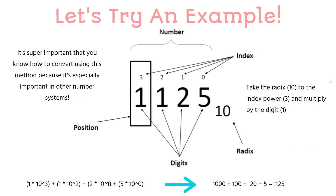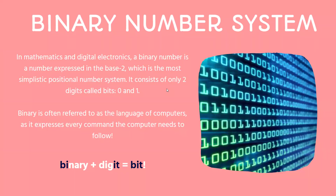This number is in the decimal number system. What you do is take the radix to the index power and multiply by the digit. That's just fancy language for saying our base is base 10. So our radix is 10, and then we multiply it to the index power. Five is at index zero, two is at index one, the first one is at index two, and the second one is at index three. We usually go from right to left for the bases, then multiply by the actual value. That's how the number 1125 is expressed.